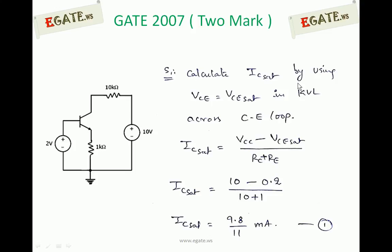Step 1: Calculate IC saturation using KVL across the collector loop with VCE = VCE_sat. Writing KVL: 10V − IC_sat × 10kΩ − VCE_sat − IC_sat × 1kΩ = 0. Therefore, IC_sat = (VCC − VCE_sat) / (RC + RE) = (10 − 0.2) / (10 + 1) = 9.8 / 11, which is less than 1 milliampere.